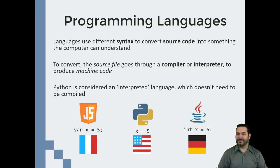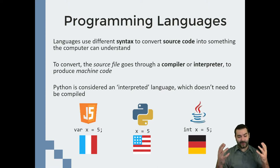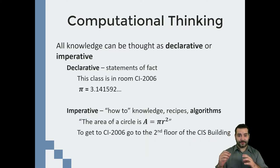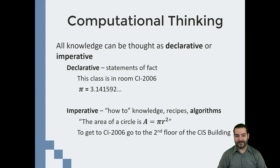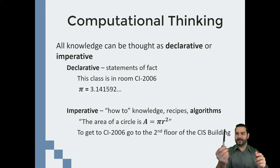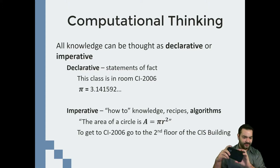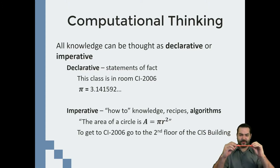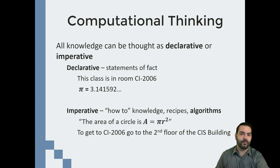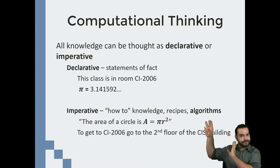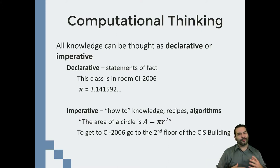Now that we're talking about understanding things, it might be a good time to think about thinking — what does it even mean to be thinking? We can actually break down thinking into two possible states: declarative and imperative. Declarative is the statements of fact — things that just are. This pen is black. This phone is a Samsung Galaxy S6. This LED light is orange. Pi is 3.141592 whatever.